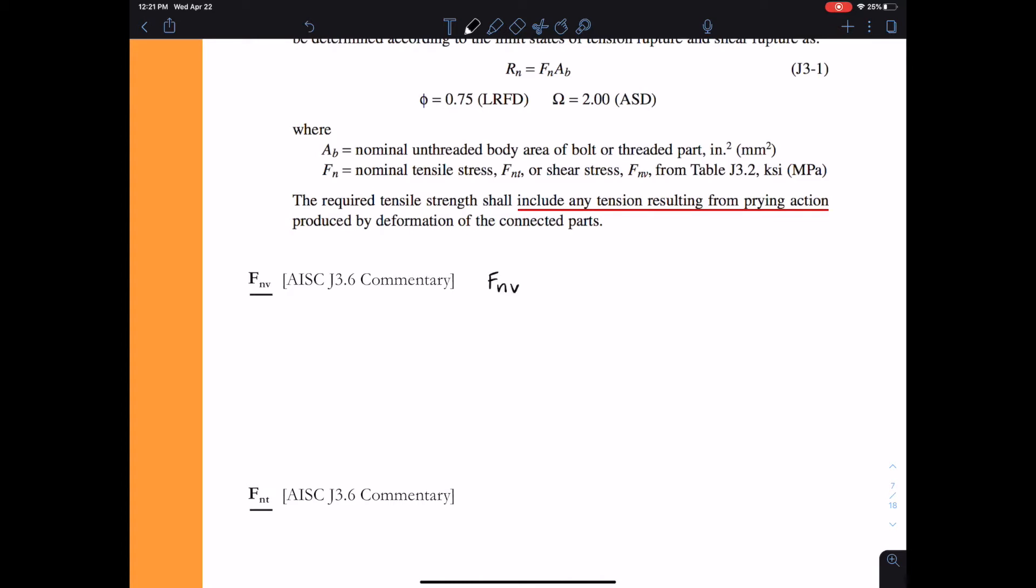Very simply put, we get the nominal shear strength from the value that's given to us in AISC table J3.2. For any grade, any group of structural bolts, we can go directly to table J3.2 and determine what the nominal shear stress for that bolt should be. Now I like to give you a little bit of background in my course, so I want to give you a little bit of how do we arrive to this value that's in table J3.2.